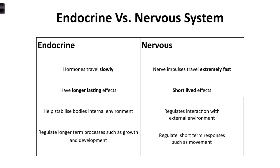Whereas the nervous system regulates our interaction with the external environment - it's the quick response. I see food and I grab it, or I see a predator and I run away. It's the quick kind of response we need to react to our external environment. The endocrine system tends to regulate longer-term processes such as growth and development, whereas the nervous system tends to regulate more short-term responses such as movement. The nervous system is our electrical system, though a little bit of chemical is involved at the synapses - a chemical needs to diffuse across that tiny gap so an impulse can travel from one neuron to the next.